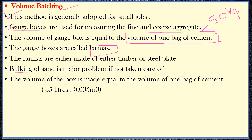When we keep sand outside, there are chances of it absorbing moisture. In volume batching, we usually don't account for the water already inside the sand. As a result, there will be more water in our concrete, and we already know the effects of excess water on concrete. That is why one major problem with volume batching is the bulking of sand.